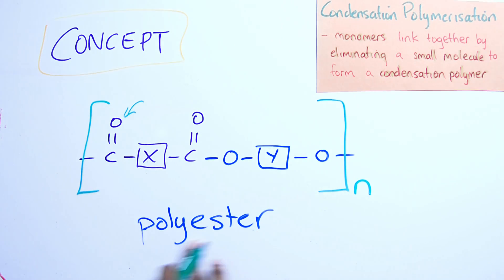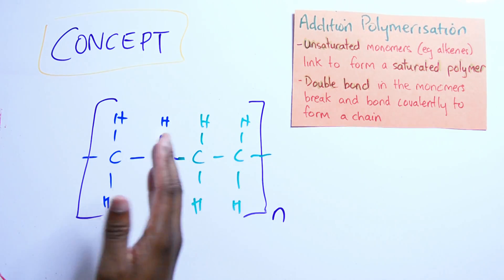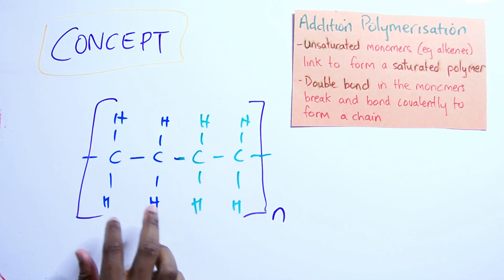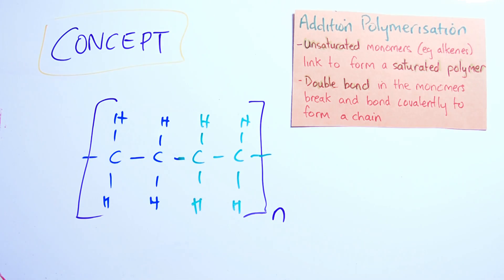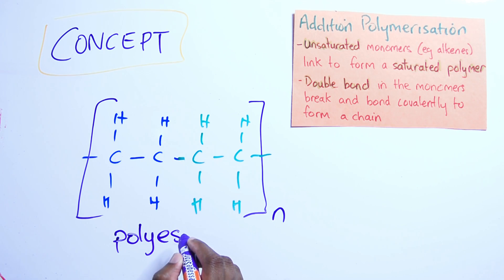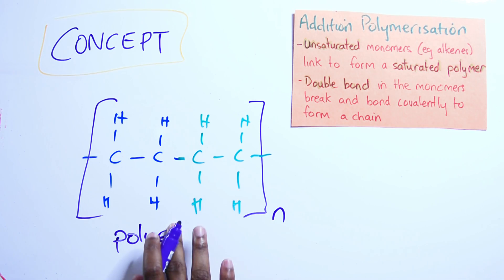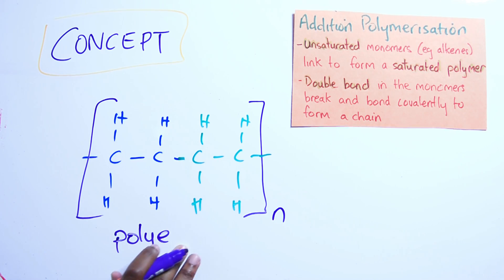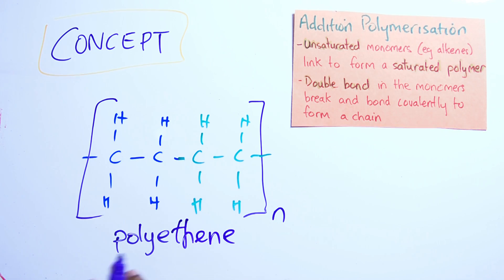Don't forget to put an n to represent repeating units, where n is greater than 50. For addition polymerization, the monomers are ethene, breaking their double bonds and forming alkane linkages. This gives us polyethene — the plastic used in plastic bags, plastic bottles, and cling wrap.